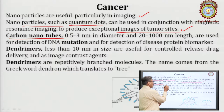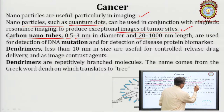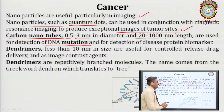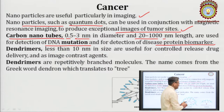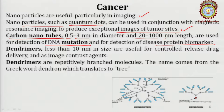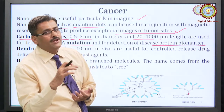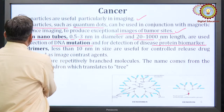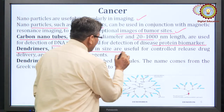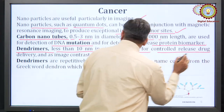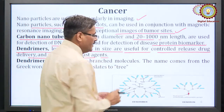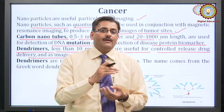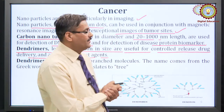Carbon nanotubes, 0.5 to 3 nanometers in diameter and 20,000 nanometers in length, are used for detection of DNA mutation and disease protein biomarkers. Since cancer arises from DNA mutation, nanotechnology-based devices can easily detect such mutations. Dendrimers, less than 10 nanometers in size, are very useful for controlled release of drugs and as image contrast agents. Through their many branches, drugs can be transported inside the body.